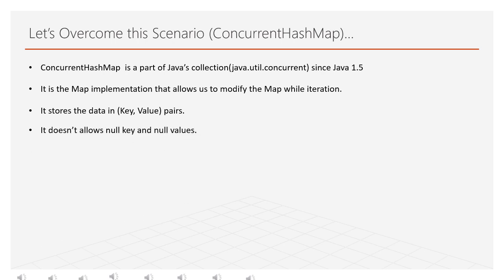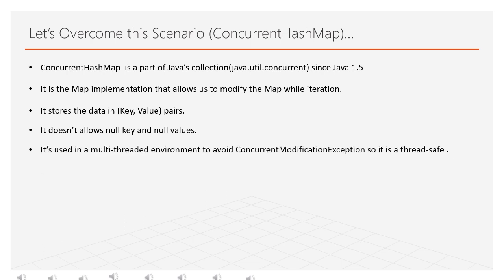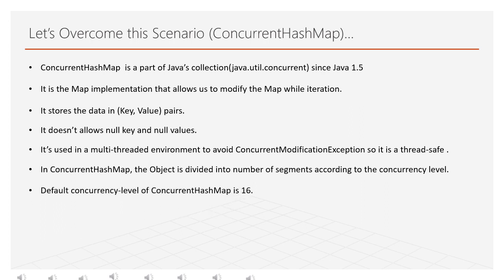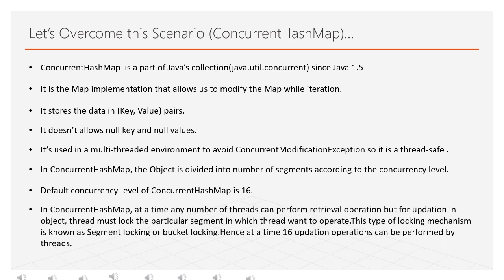Unlike HashMap, ConcurrentHashMap does not allow null keys or null values. It is used in a multi-threaded environment to avoid ConcurrentModificationException, so it is thread-safe. The object is divided into segments according to the concurrency level. The default concurrency level is 16. At a time, any number of threads can perform retrieval, but for updates, a thread must lock the particular segment it wants to operate on. This is known as segment locking or bucket locking, allowing up to 16 update operations simultaneously.